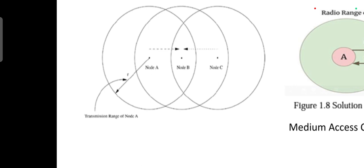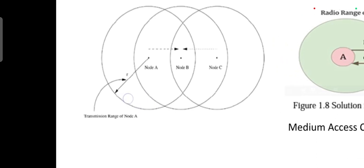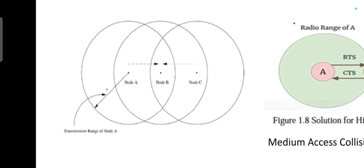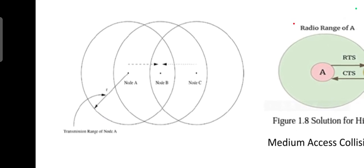At this moment, the packet will collide at node B because both node A and node C are hidden from each other because they are from different direct transmission ranges.